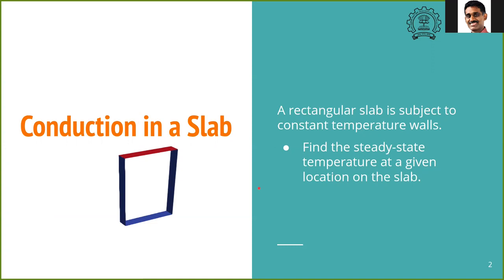The problem we will be discussing is 2D conduction in a rectangular slab. The side walls of the slab are subjected to constant temperature. Three walls are at the same temperature and the top wall is at a different temperature. The problem is to find the steady state temperature at a given location on the slab.